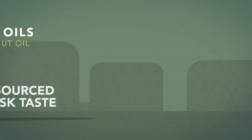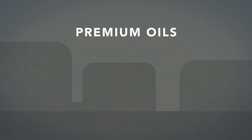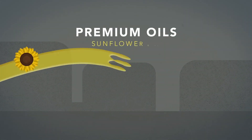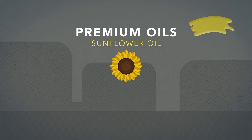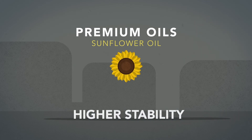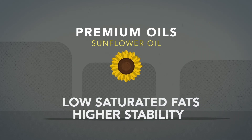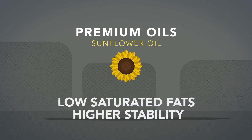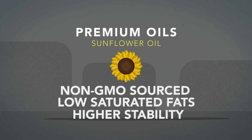And then there's the premium vegetable oils, such as sunflower oil, which has a light color, higher stability, is low in saturated fat, and is non-GMO sourced.